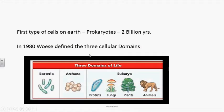The first type of cells on earth are prokaryotes. Life on earth started 4 billion years ago, and the first life on earth was prokaryotic. For up to 2 billion years since the start of life, we had only prokaryotes. Then it shifted to eukaryotic types of cells.